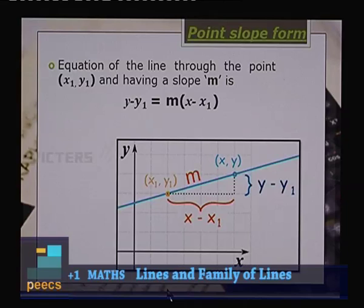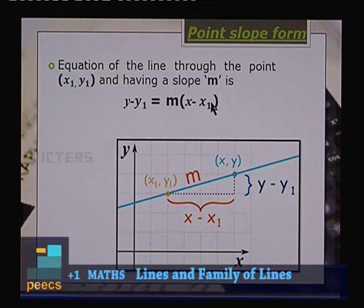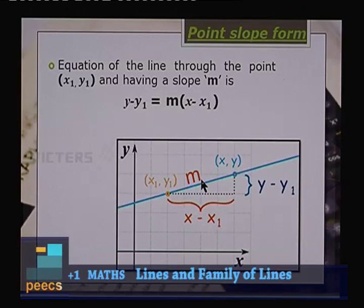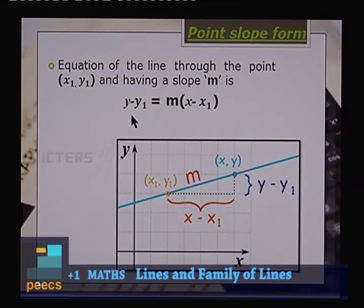First form: point-slope form. The equation of the line through the point (x₁, y₁) with slope m is y − y₁ = m(x − x₁). Here the given point is (x₁, y₁), the general point is (x, y), and slope m = tan θ = (y − y₁)/(x − x₁), which gives y − y₁ = m(x − x₁).